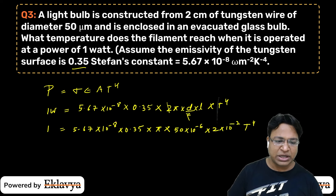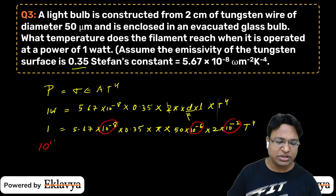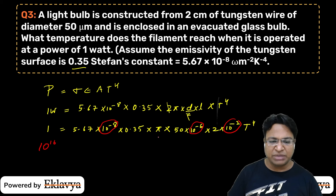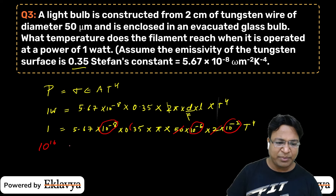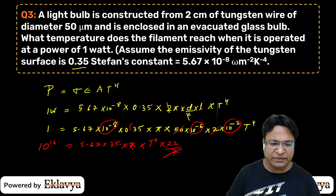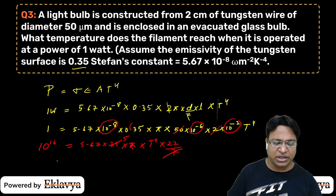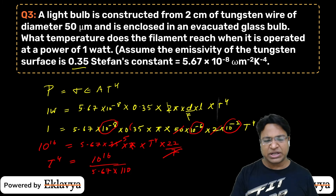Now let's handle the powers of 10. We have 10⁻⁸, then 10⁻⁶ and 10⁻², giving 10⁻¹⁶ total in the denominator. So T⁴ has 10¹⁶ on top. We compute 50 × 200 = 10,000 → factor of 10⁴, leaving 10¹². Then numerically: 5.67 × 0.35 × π → approximately 5.67 × 5 (using 22/7 approximation for π × 0.35 ≈ 1.1) ≈ 5.67 × 110 ≈ 623.7.